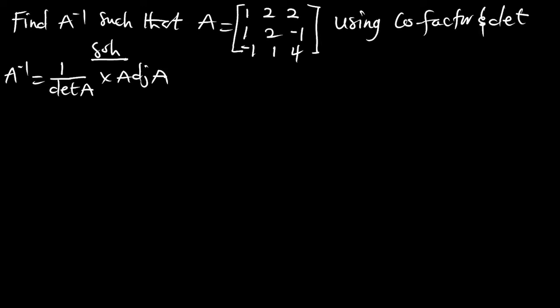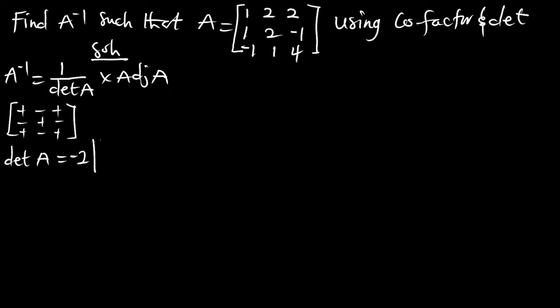With matrix A, let's first find the determinant. I'm going to compare this matrix to the sign notation — positive, negative, positive — in this way. My delta of A will be computed by choosing column 2 for the analysis. I select the first 2, and from the sign notation it is negative, so that starts as negative 2. The 2x2 matrix left will be 1, negative 1, negative 1, and 4.